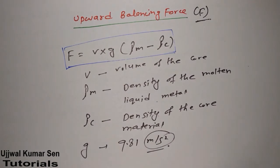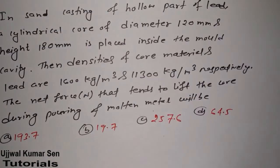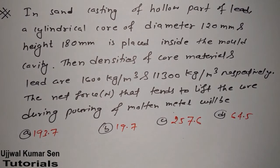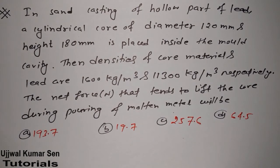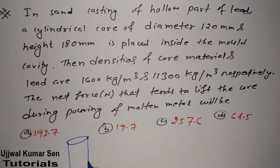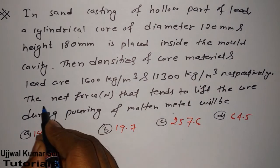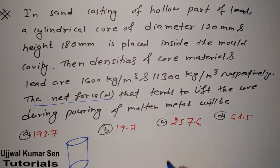Here is the question in front of you. You can read it and try to solve it yourself — pause the video and try. Otherwise, just keep watching and I will explain everything. In sand casting of a hollow part of lead, a cylindrical core is used. We need to find the upward balancing force. The formula is F equals V times (density of molten metal minus density of core) times g.